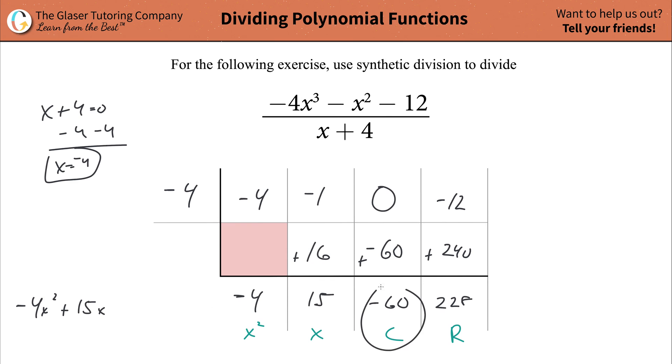-4x² + 15x. Great. Minus 60, not minus 60C. That's constant. So there's no x. And then plus your remainder, plus because it's positive. There's no sign there. And we're going to write the remainder 228 over whatever your divisor is, x + 4.